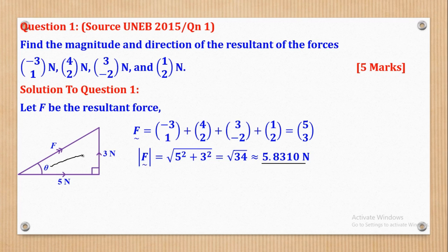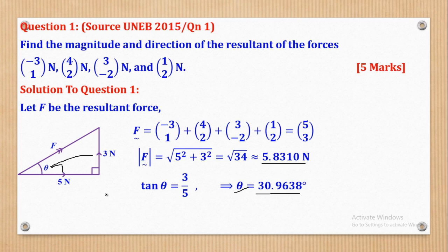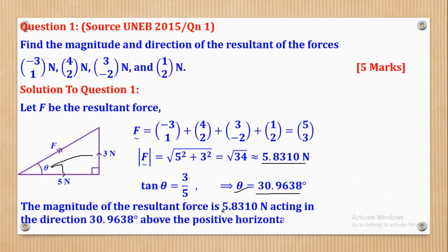For the direction angle theta, we realize that 3 is the opposite and 5 is the adjacent. So tan θ = 3/5, and when I make theta the subject I come up with 30.9638 degrees. Therefore, the magnitude of the resultant force is 5.8310 Newtons acting in the direction 30.9638 degrees above the positive horizontal.